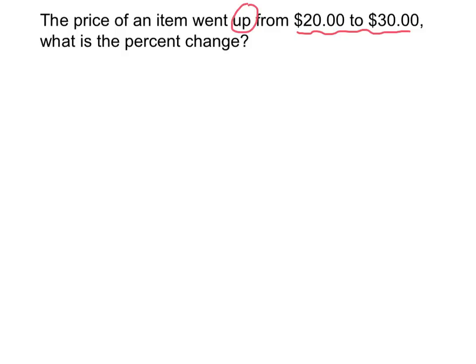So if we find the amount of change, the amount of change is the new price minus the original price over the original price of $20. So the difference between the new price and the old price is $10. The original price is $20.